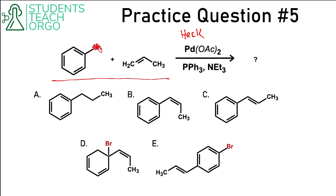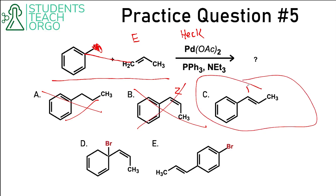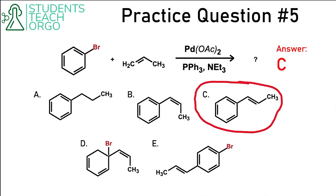In the Heck reaction, we can get rid of the bromine and draw a new bond between those two carbons. The major product will have the E stereochemical configuration. In A, there's no double bond, so I don't like A. B has the right number of carbons, but it's the Z stereoisomer, so I don't like B. C looks good — it's the E stereoisomer with the right number of carbons. D and E are both wrong because the bromine gets lost in this reaction. The correct answer is C.